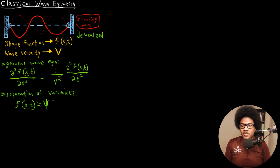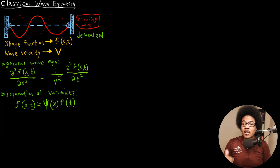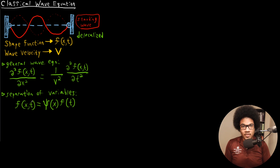I'm going to call the function of position psi of x, and the function of time f of t. I'm choosing psi for a specific reason — this is the Greek letter psi, which is going to be our wave function in quantum mechanics, but I'll get into more details of that in the next video. For now, I'm just going to label this function as psi. So we've applied separation of variables: the shape function is going to be a product of a spatial position function and a function of time.